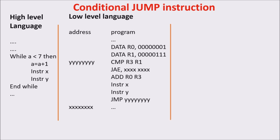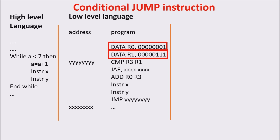Here you can see the translation. On the left we put the address and on the right the program. We put the number 7 in R1 and the number 1 in R0 with the data instruction, and we imagine having already put the variable A in R3. Then we compare R1 and R3 — A and 7 — and use a conditional jump instruction that jumps if the result of the comparison is larger or equal. So if R3 is larger or equal to 7, it jumps to address X outside the loop.